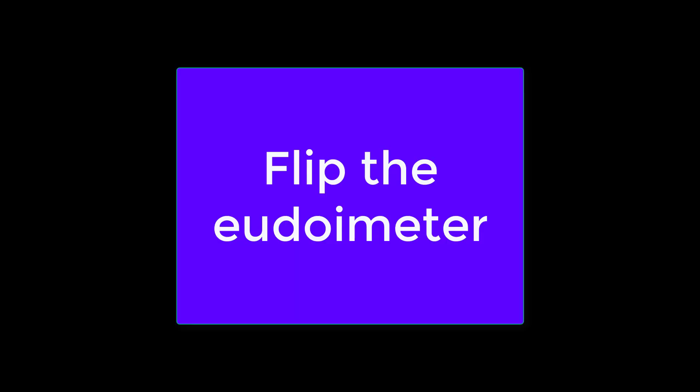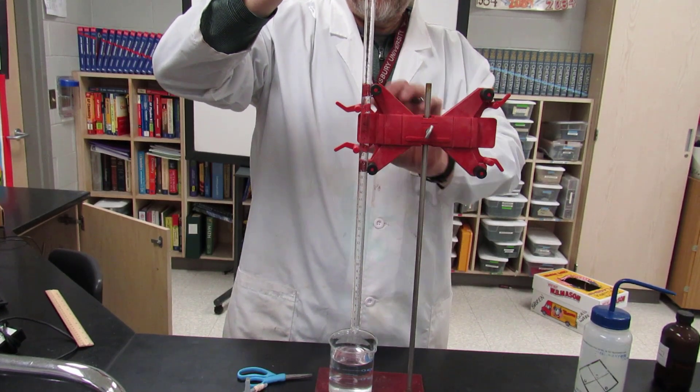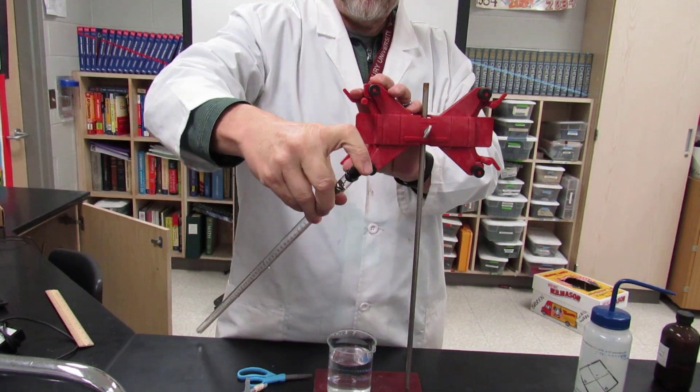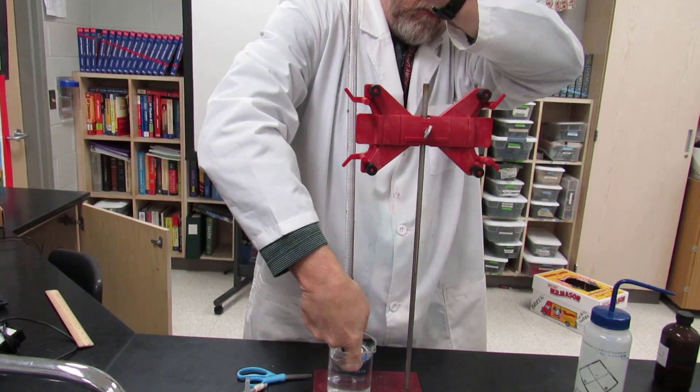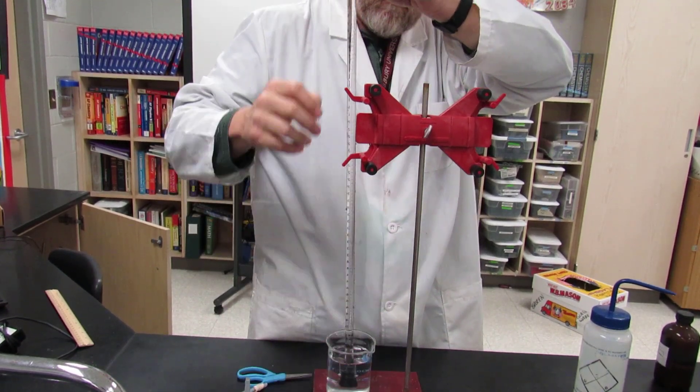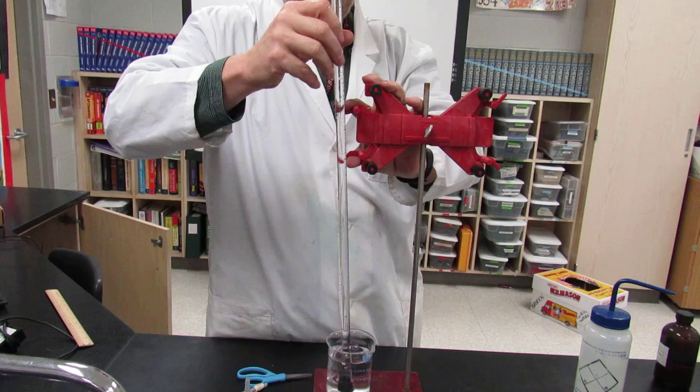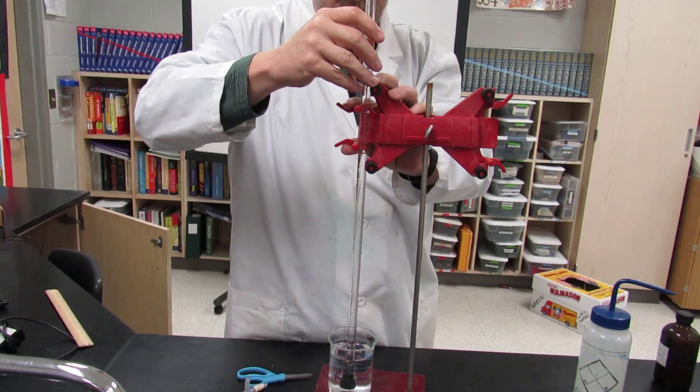Press it on, not too hard, enough that it's going to stay in there. Now take your finger and put it over the hole at the top, and then flip the eudiometer over keeping your finger on the hole. Put the eudiometer top into the water. Once it's in the water you can remove your finger and clamp it into the ring stand.